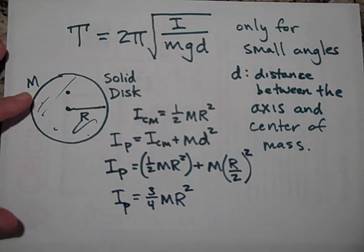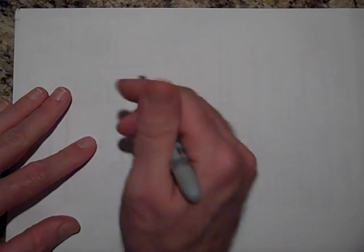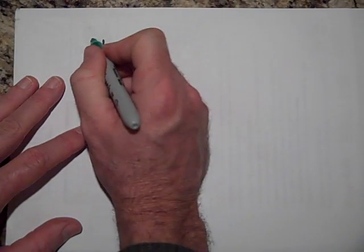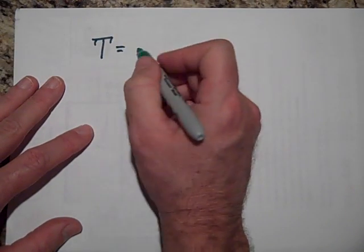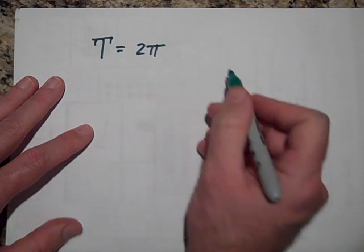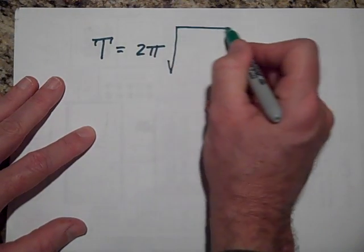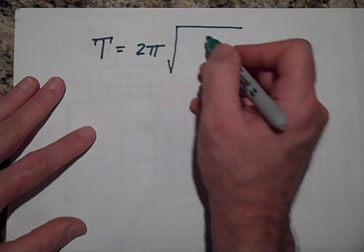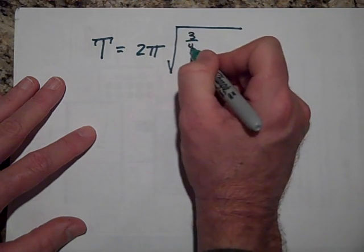Okay, now I'm good to go, get another sheet of paper, and say that the period of this thing, going back and forth, is going to be 2π times the square root of I, but I is 3 fourths MR squared.